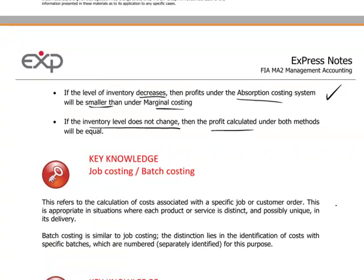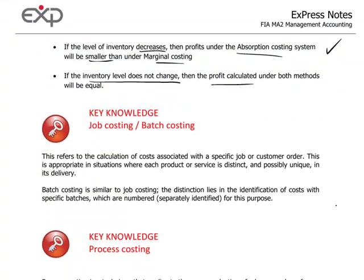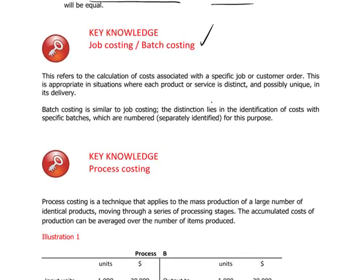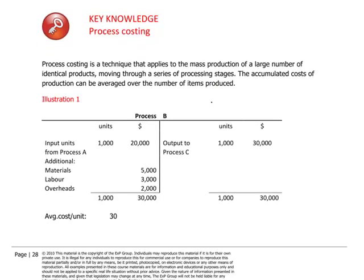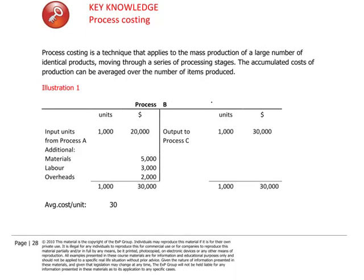Now we want to move on to some other costing techniques. Job costing and batch costing has been encountered in the previous paper — MA1 for management information — and it just requires some review by the candidate. Process costing is a trickier area, a little bit more involved, and therefore I want to spend some time reviewing our understanding of process costing as a technique applying to mass production of standardized identical products moving through a series of processing stages.